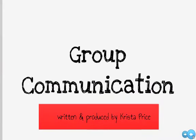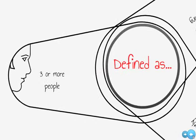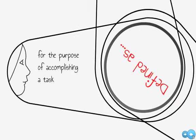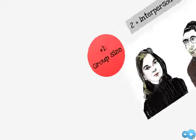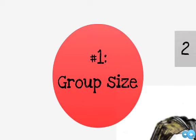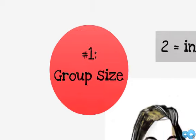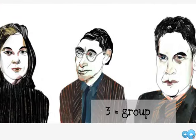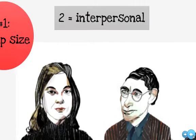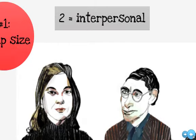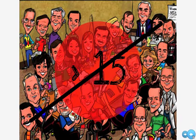Group communication is defined as three or more people working interdependently for the purpose of accomplishing a task. There are three primary features of small group communication. The first is group size. In order to be considered group communication, groups must be at least three people — otherwise the communication is simply considered interpersonal. The group also shouldn't be larger than 15, otherwise true communication within the group becomes difficult to maintain.